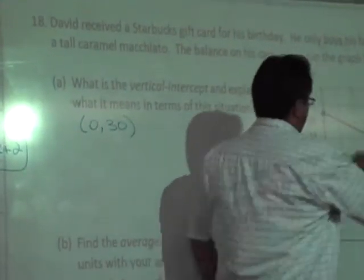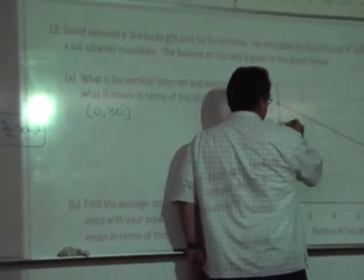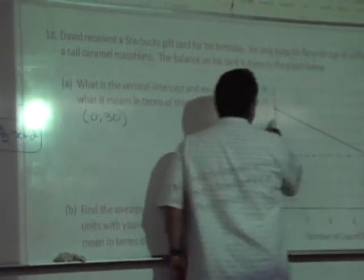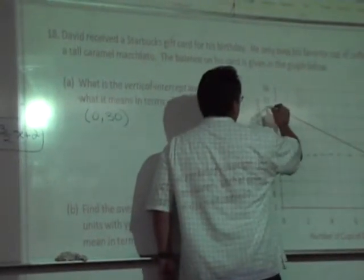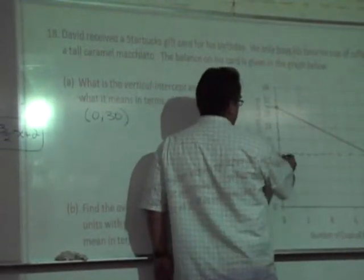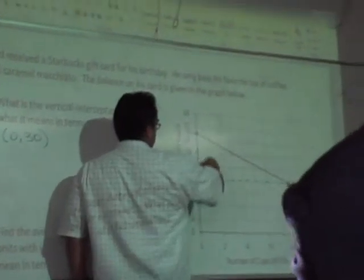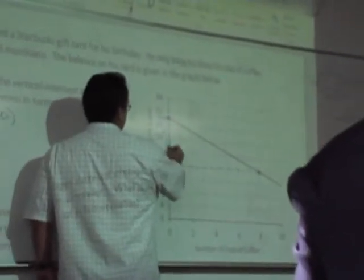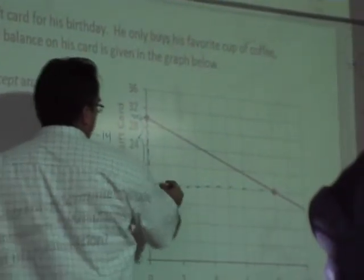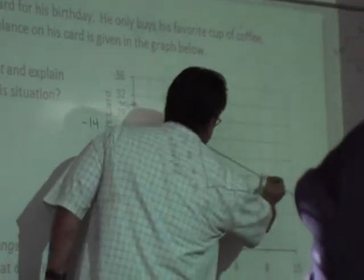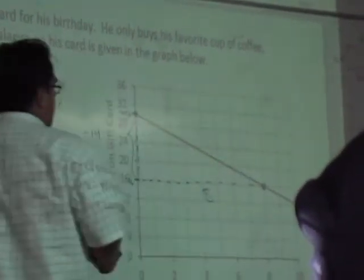You can use the formula or you can use the graph. I'm big on using the graph if you know how to read the units here. We're going from 30 to 16. How many units are we going down here? From 30 to 16 we go 14 down. How many units am I going over? From zero all the way to 8. So what's the slope?